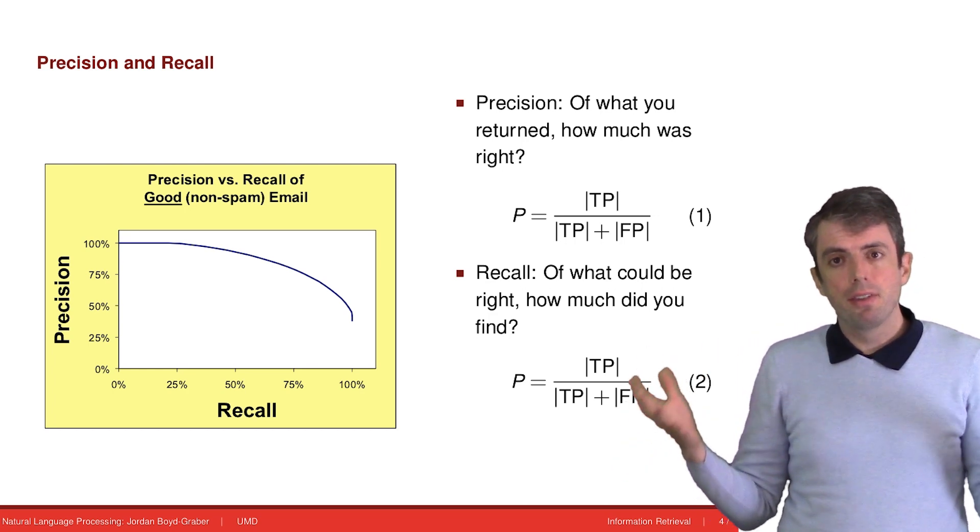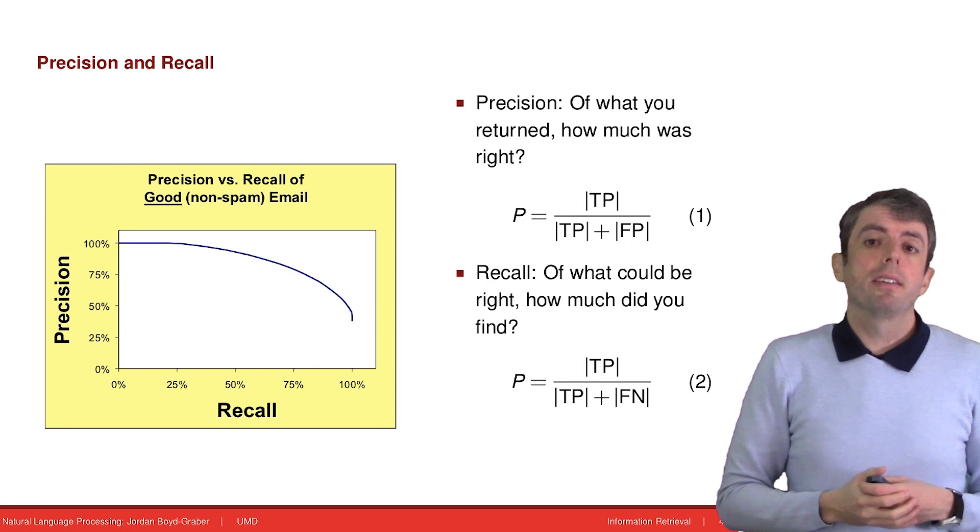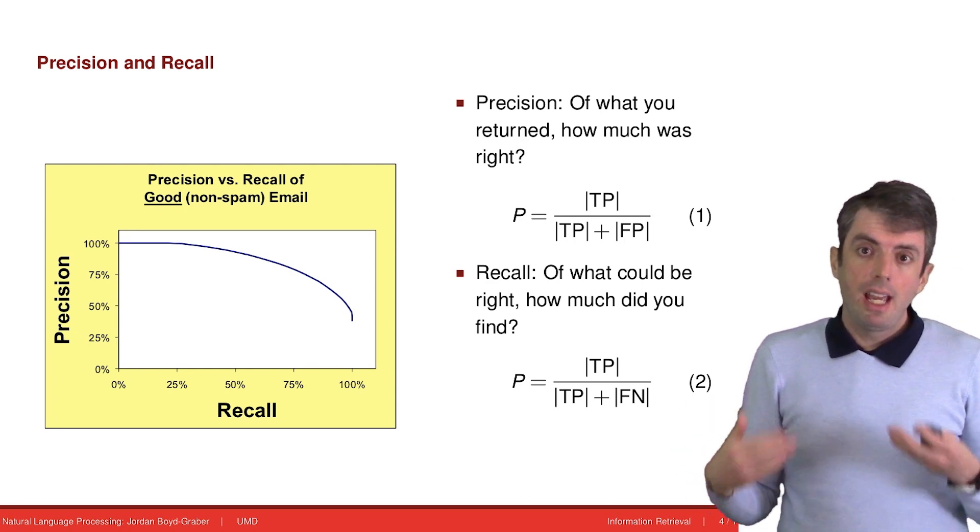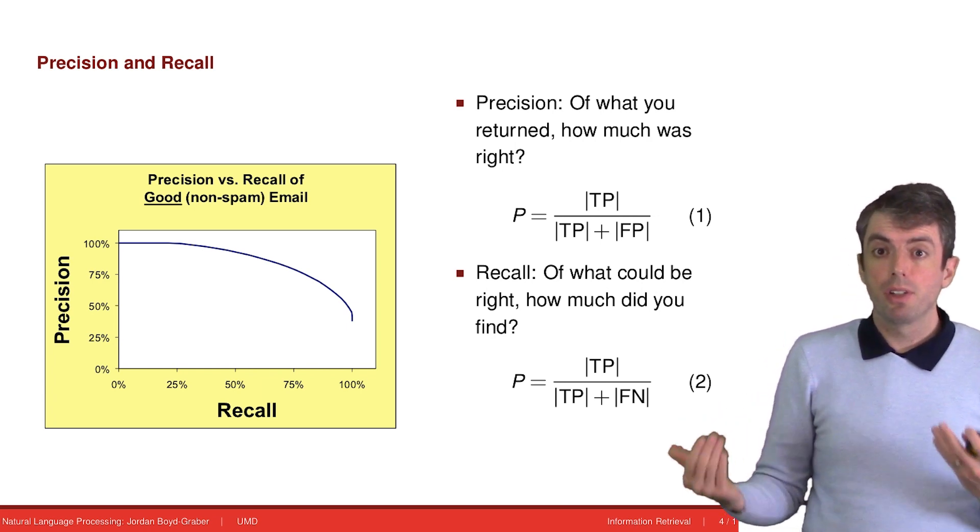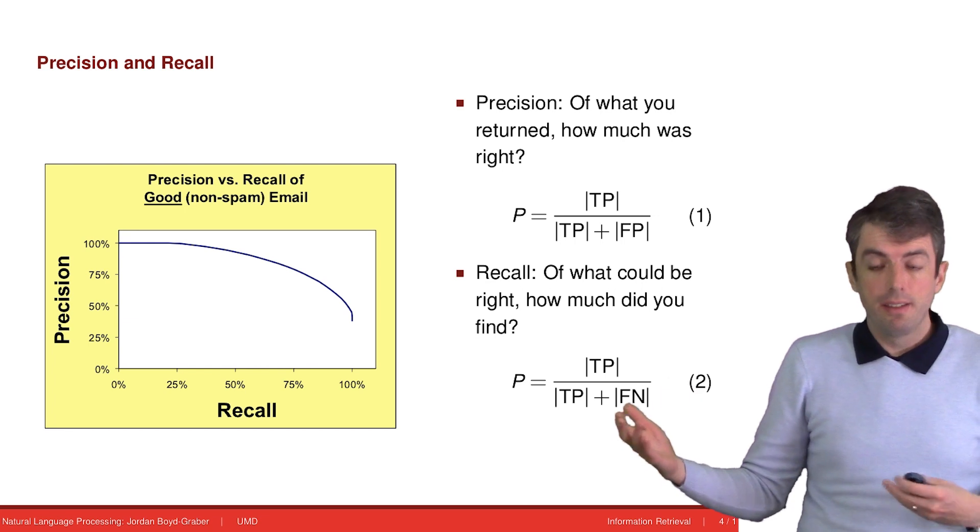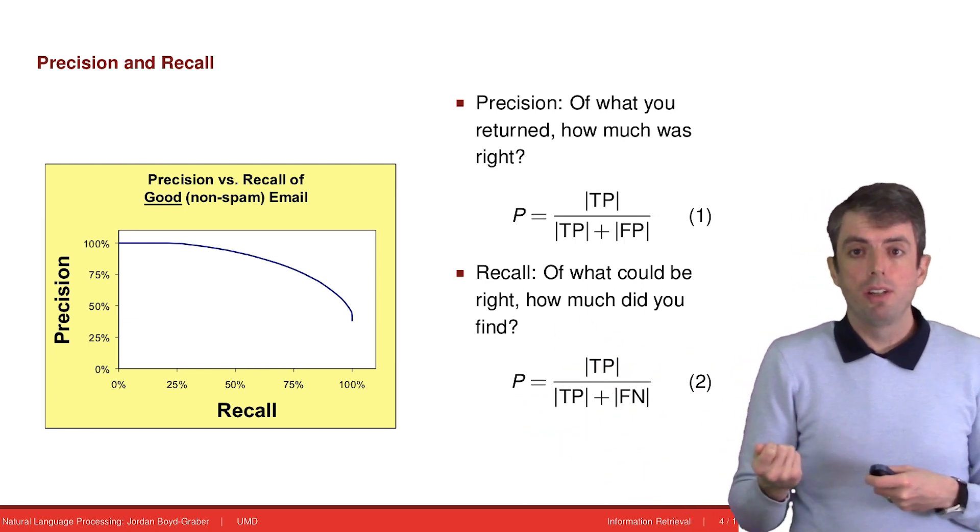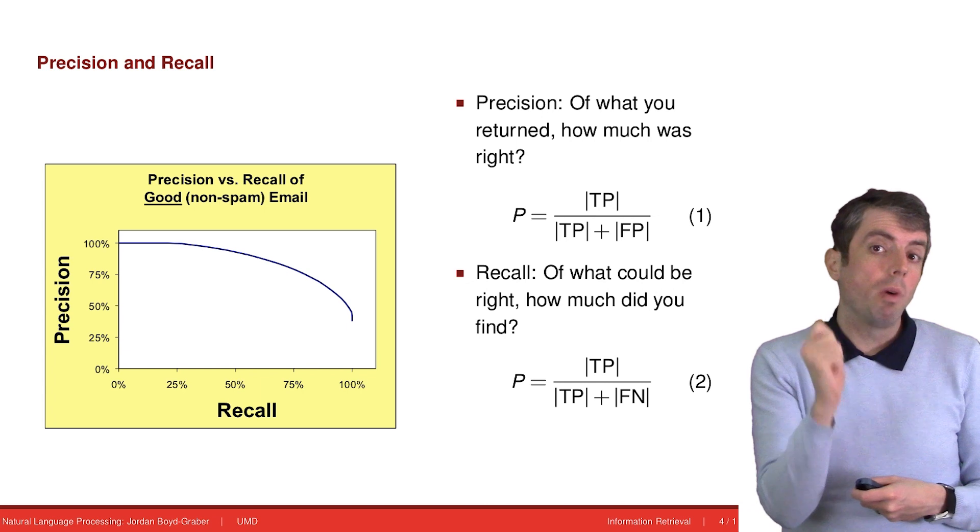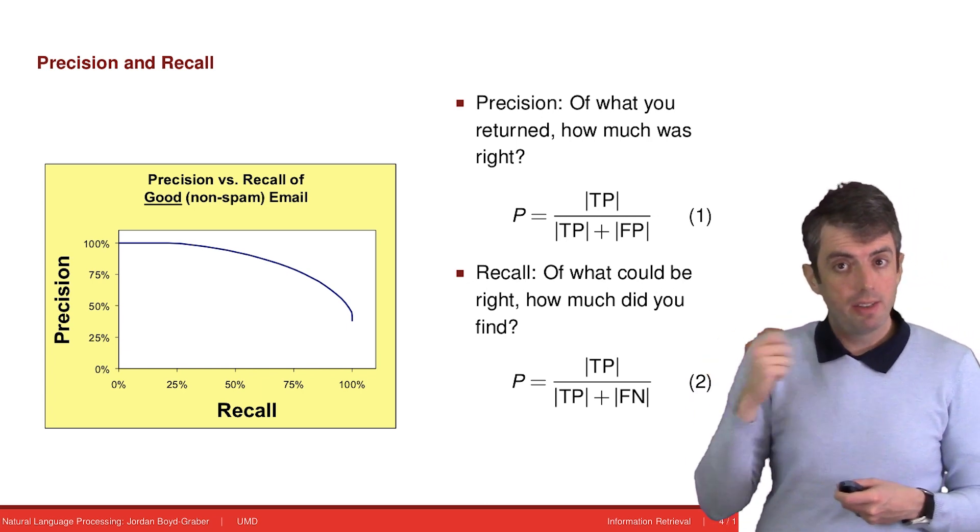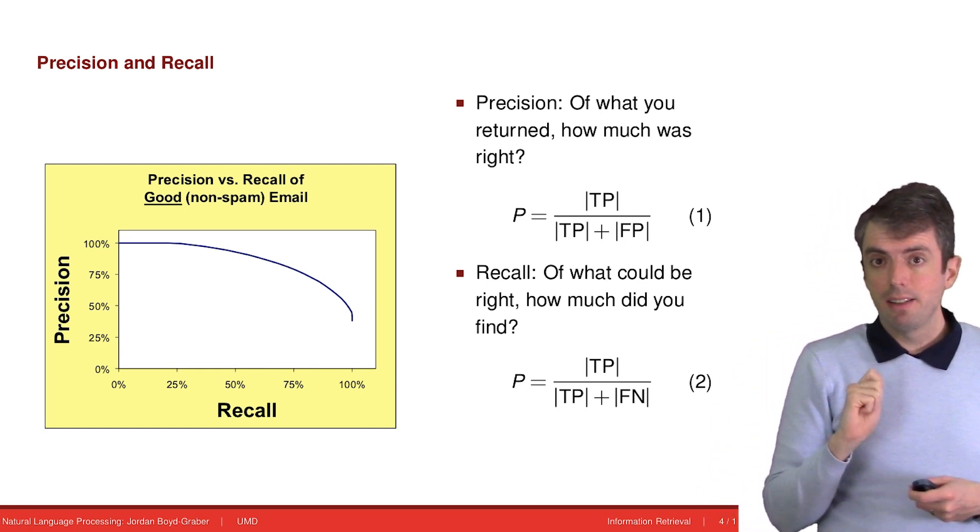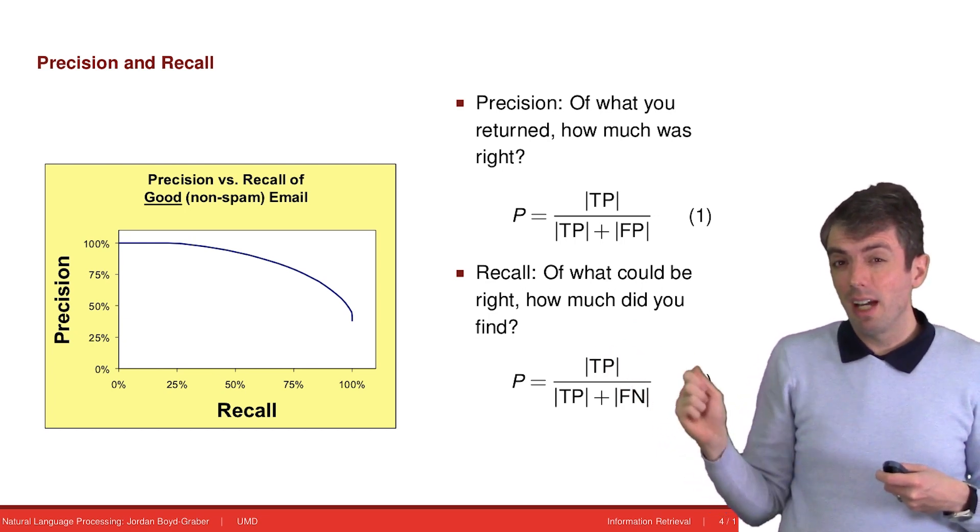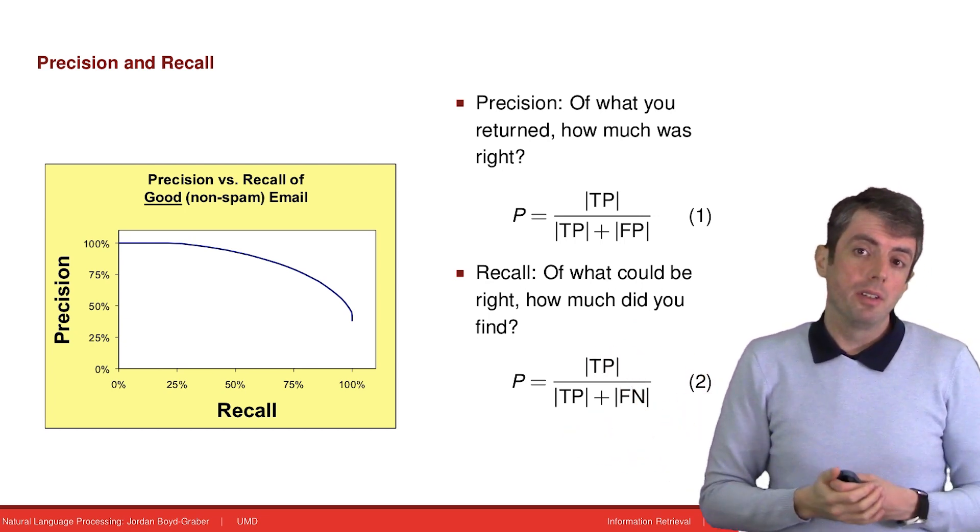But it only tells half of the story. The other way of looking at this problem is in terms of recall. Of the things that could have been relevant, how many of them did you actually return? This is important because your system could have very good precision by only returning one document but being very sure that this document is relevant. You could get perfect precision if you did that. But that necessarily wouldn't be good enough because then you're only returning one relevant document each time and you're not telling the whole story.